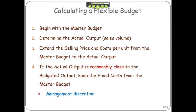The first thing we need to do is calculate a flex budget. You start with the master budget, you then look at your actual output, and then you extend all of your line items from the master budget except you use the actual output.